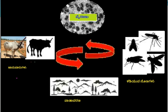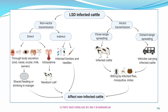The virus is transmitted from one animal to another mainly by biting flies, which proliferate depending on the environment. LSD-infected cattle moving from one area to another — via vehicles — may spread disease when bitten by flies, mosquitoes, or ticks. Non-vector transmission through body secretions — oral, nasal, ocular, milk, or semen — is also possible but very rare.